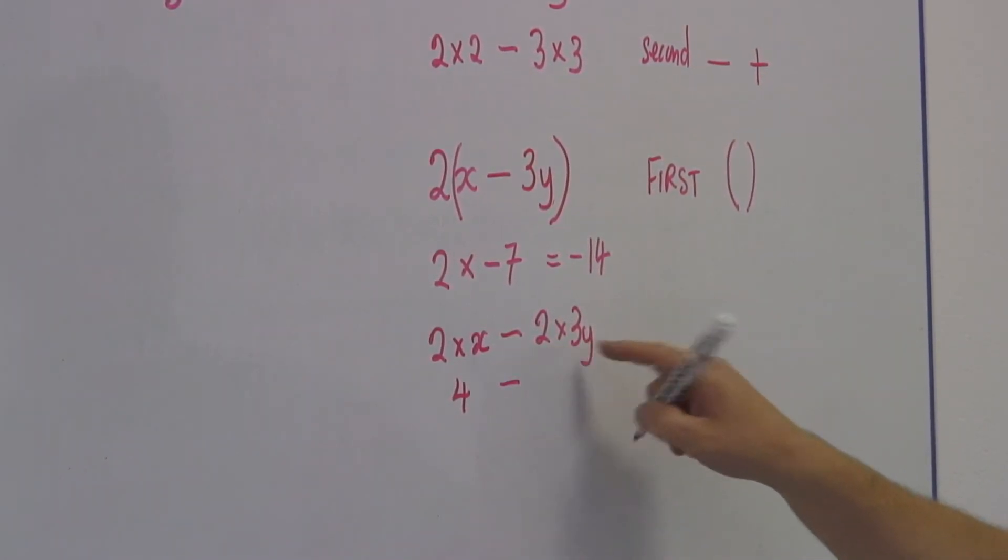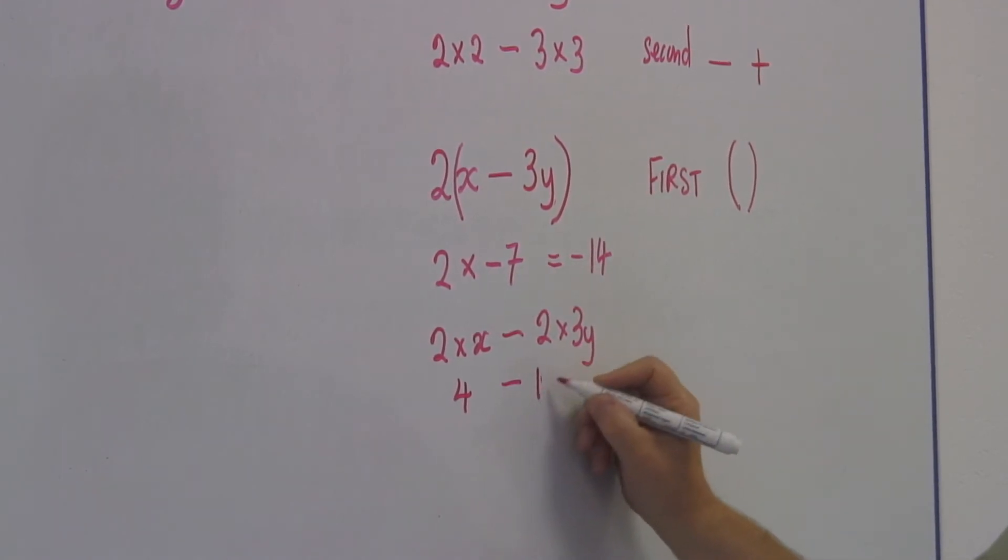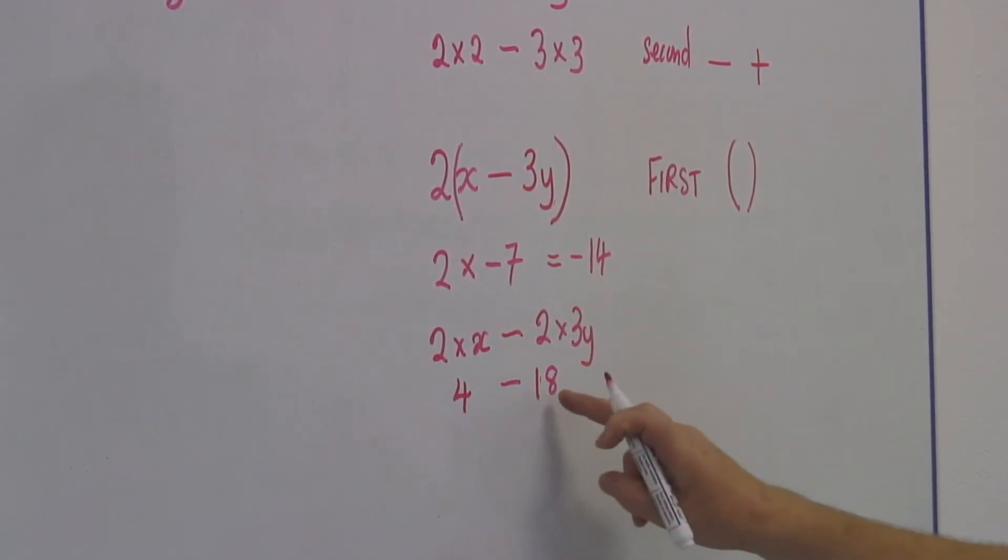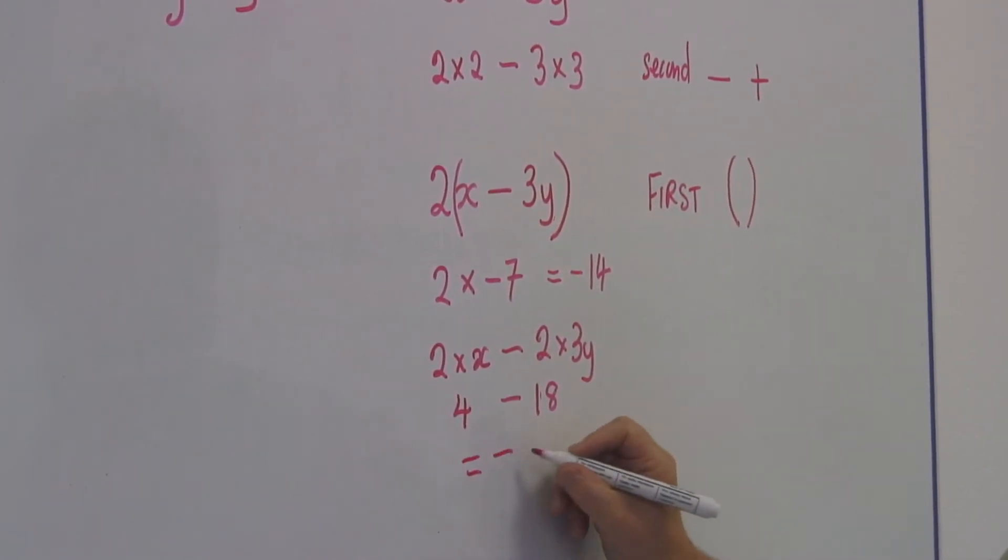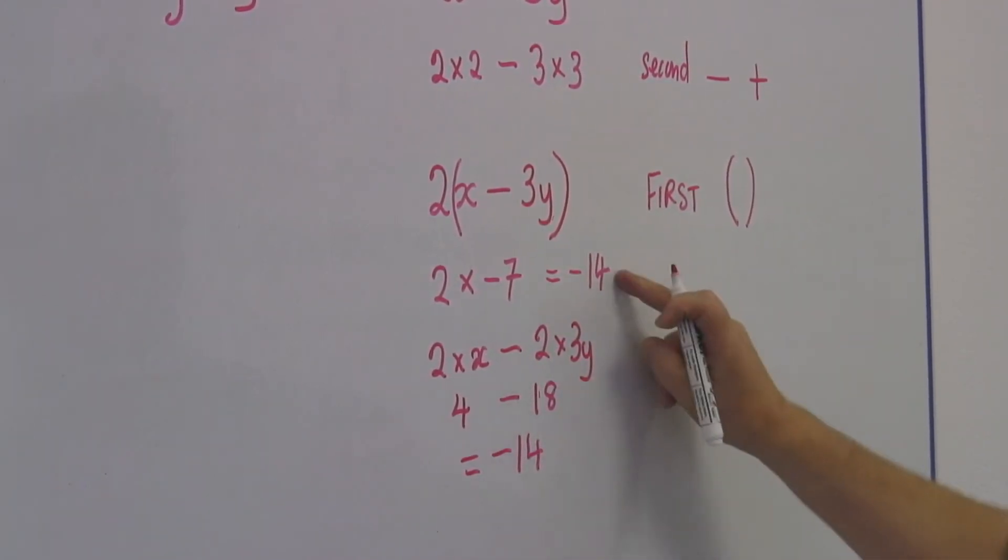Minus 2 times 3 times y is 6. 4 minus 12 equals minus 8... no, 4 minus 18 equals minus 14. Exactly the same result.